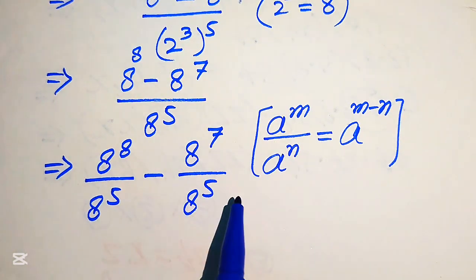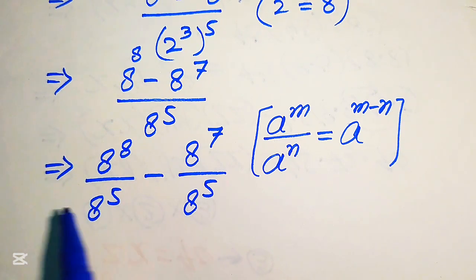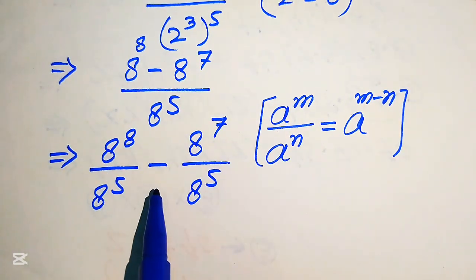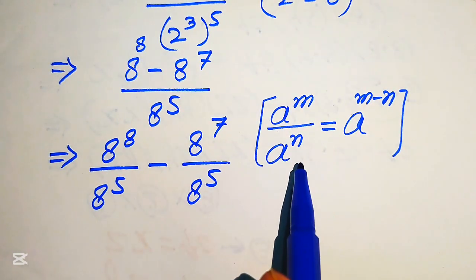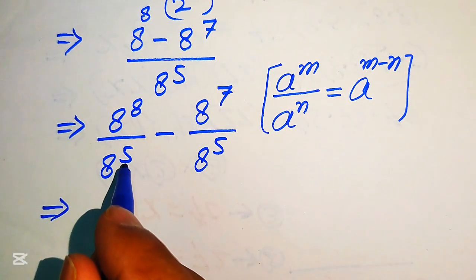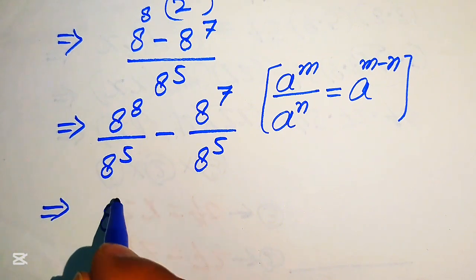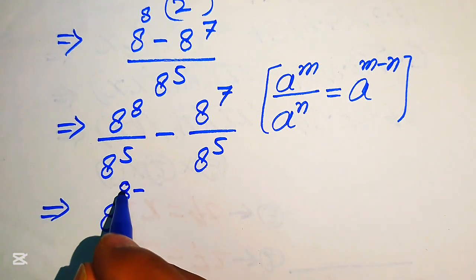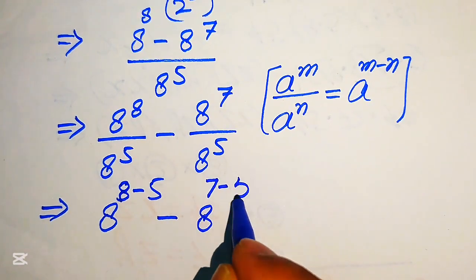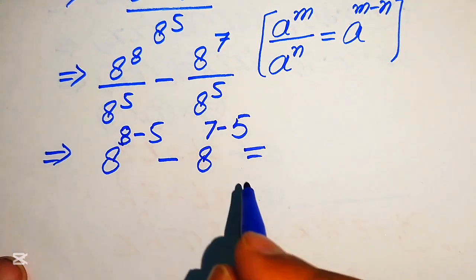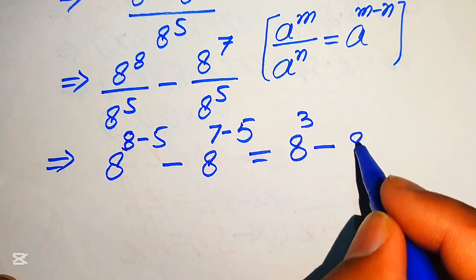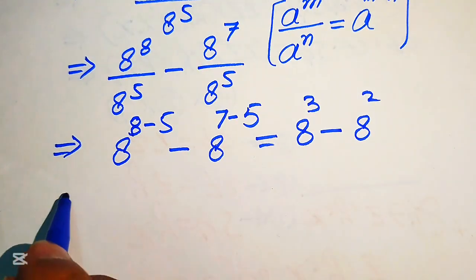In order to apply this exponent law, the bases of both terms must be the same. Our given conditions satisfy this requirement, so we move the exponent from the denominator to the numerator. This gives us 8 to the power of 8 minus 5, minus 8 to the power of 7 minus 5. This simplifies to 8 to the power of 3, minus 8 to the power of 2.